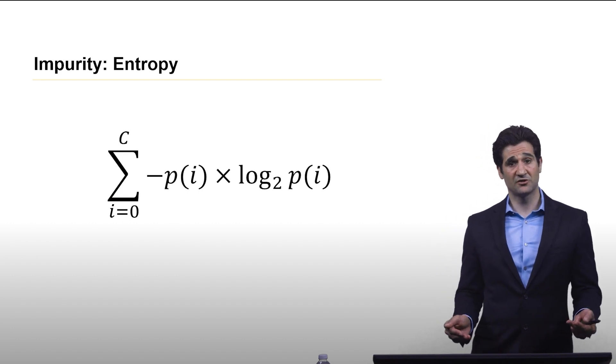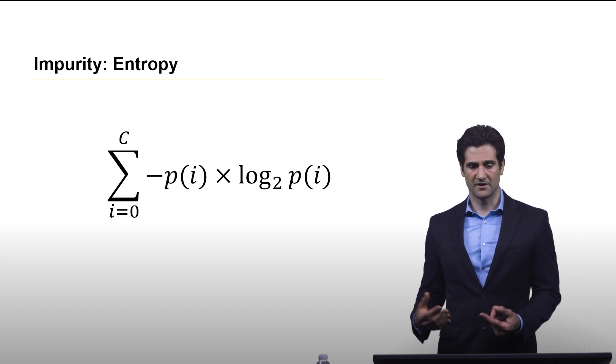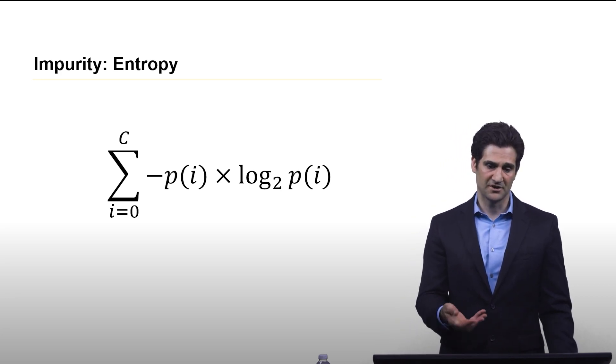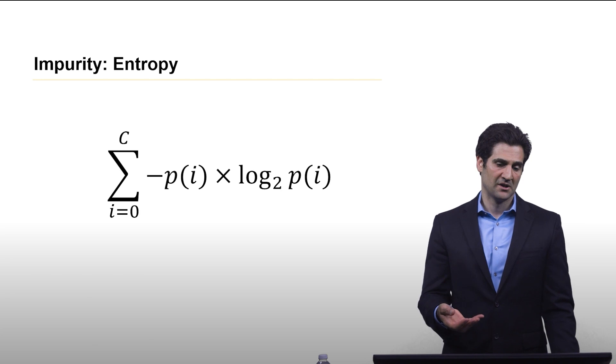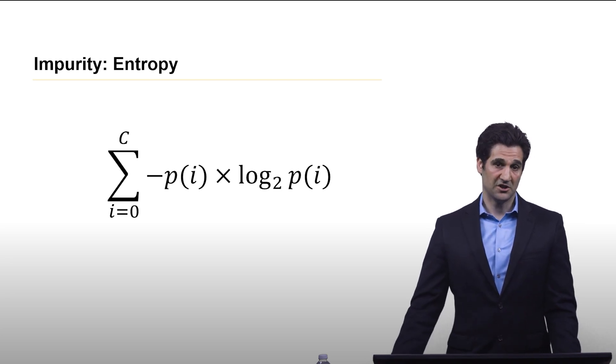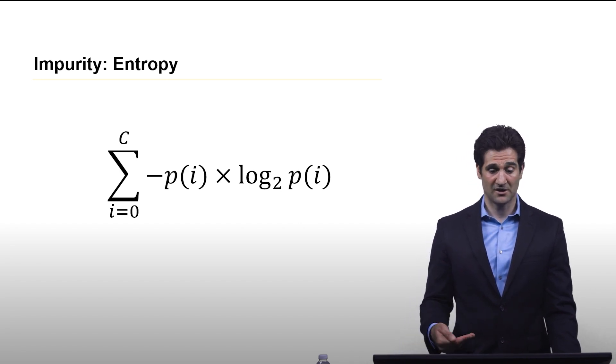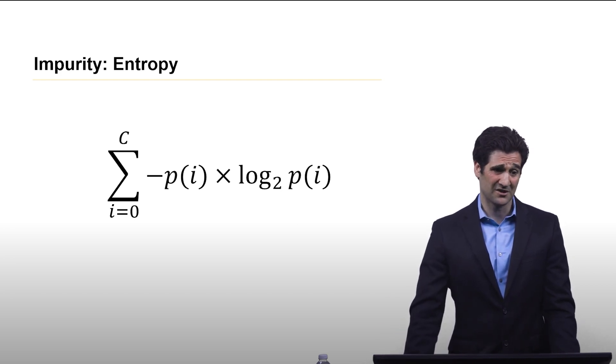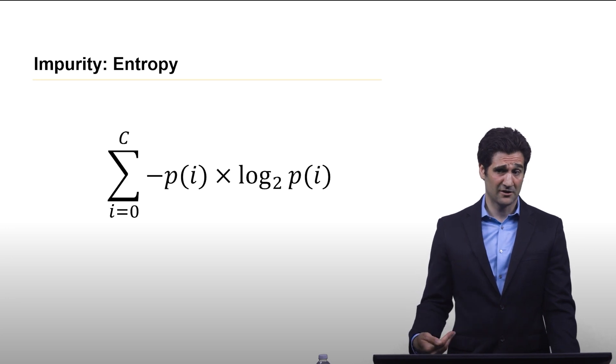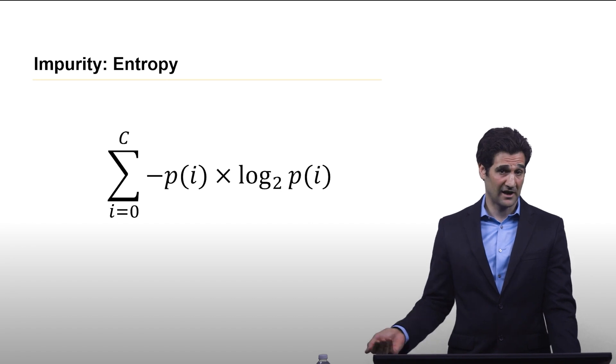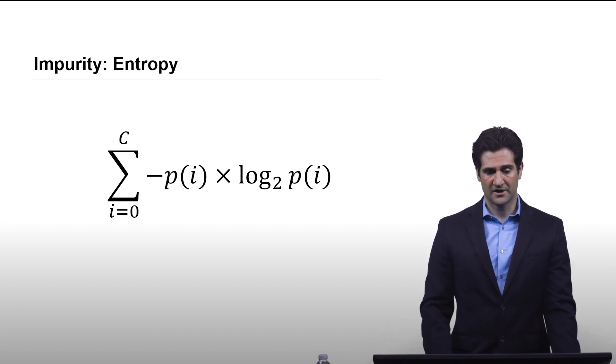Now Gini index is just one option for computing impurity. Another option is entropy. And essentially what happens is you treat entropy in much the same way as you would use the Gini index in the example I showed you. Now, it is more difficult to calculate than the Gini index, and it does make implementing it more challenging. But honestly, in actuality, most mature software packages such as scikit-learn are going to allow you to use either or, because they're both quite common.